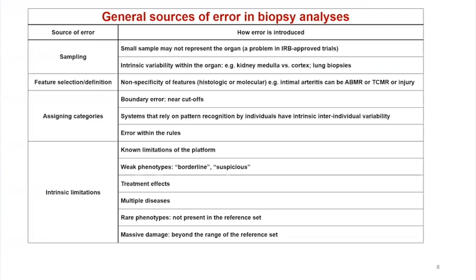There's also intrinsic variability within the tissue, and there's a lot of variability in some biopsies — lung biopsies are really very noisy. There's non-specificity of features; we're always looking to define disease states but must look at features which are not intrinsically specific. Then there's assigning categories — you're trying not to just put patients into a bucket, but to establish quantification and probabilities. Systems that rely on pattern recognition have particular problems with errors, as does any form of interpretation in which one human has to make a qualitative decision about a pattern.